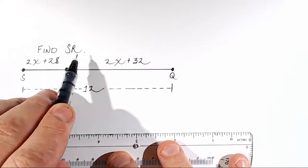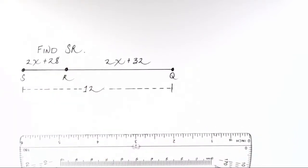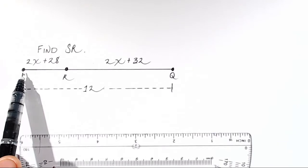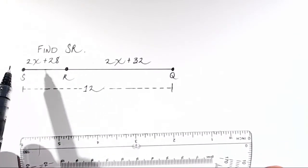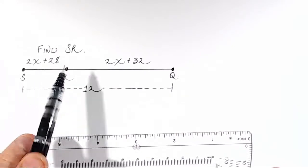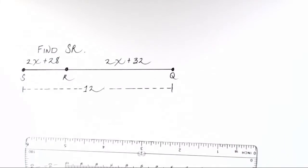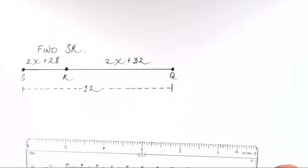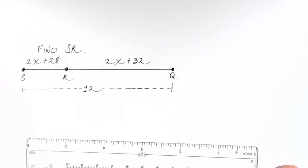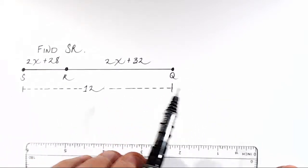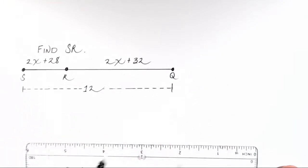So we are asked to find SR. Well, what is SR? SR is actually a distance, the distance here from this point to this point, from S to R. Right now, that distance is being defined by this algebraic expression 2x plus 28. So we've got to find out what it is with a numerical value, with no x's. We are also given that segment RQ is equal to 2x plus 32. And most importantly, we're told that the entire segment, the whole thing, the composition of these two smaller segments is equal to 12. That's going to be super important.